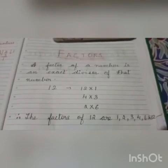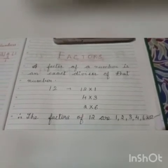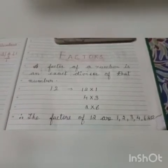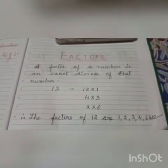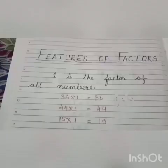So the factors of 12 are 1, 2, 3, 4, 6 and 12. And children, here 12 has 6 factors.